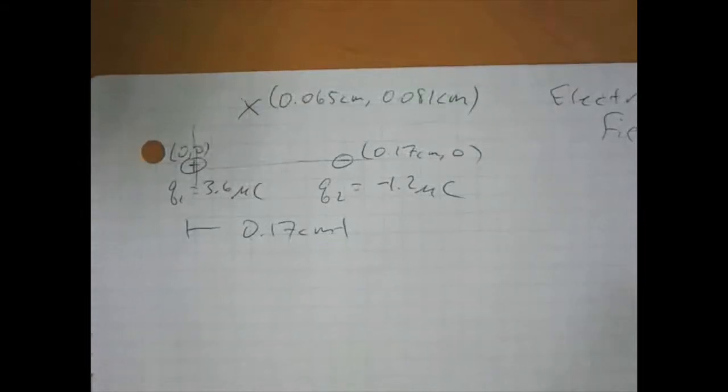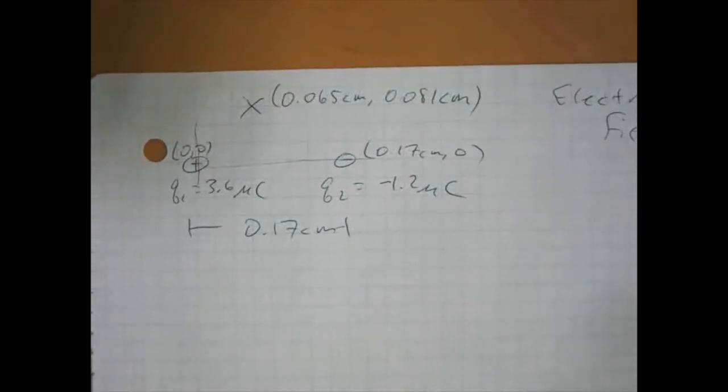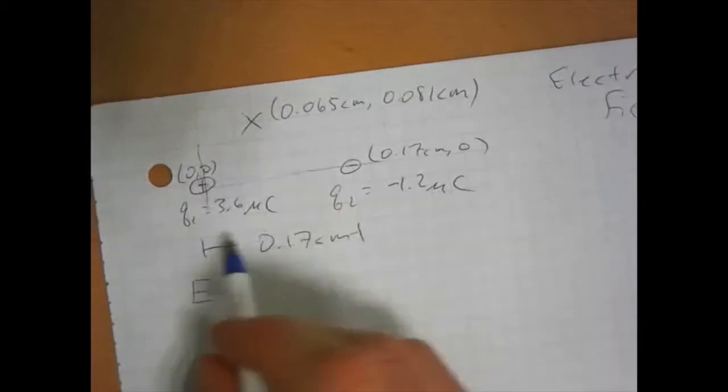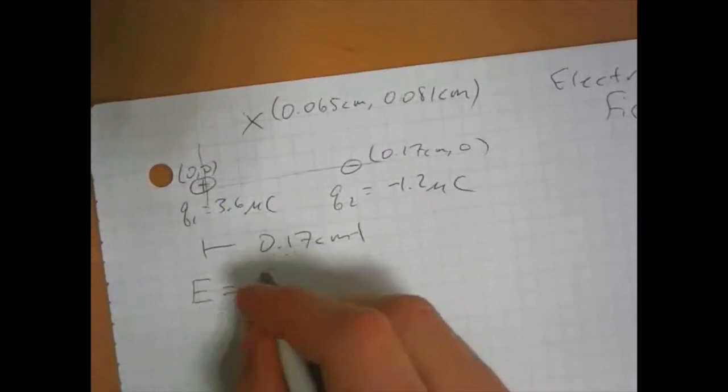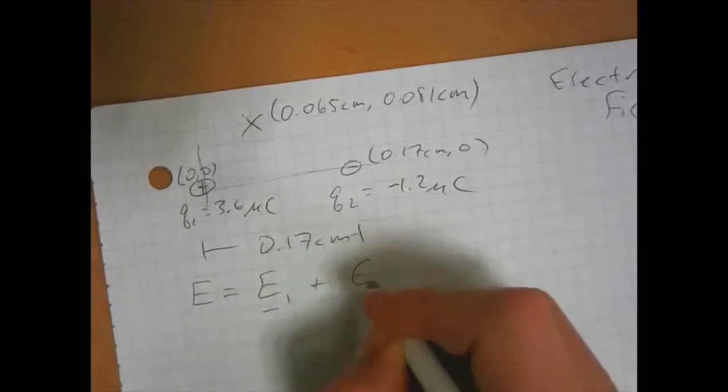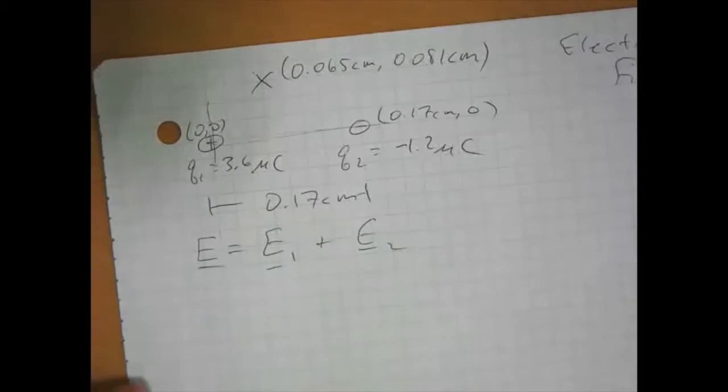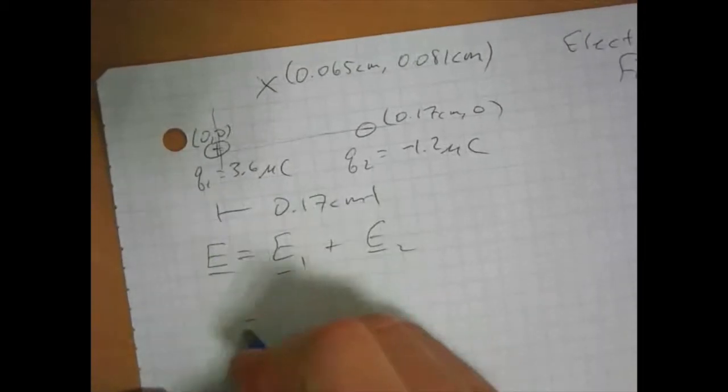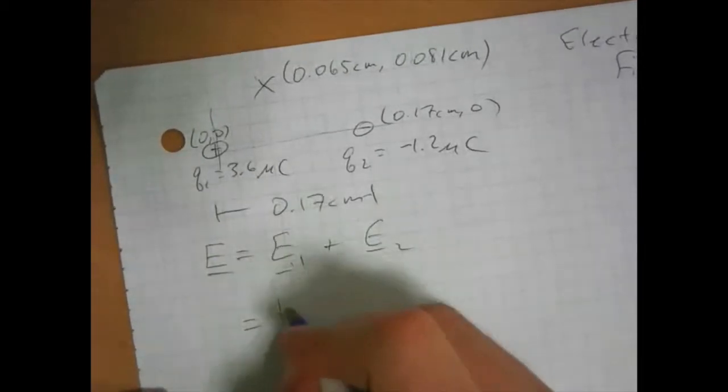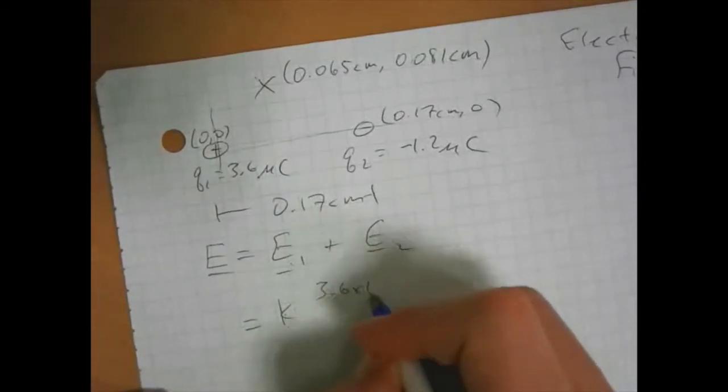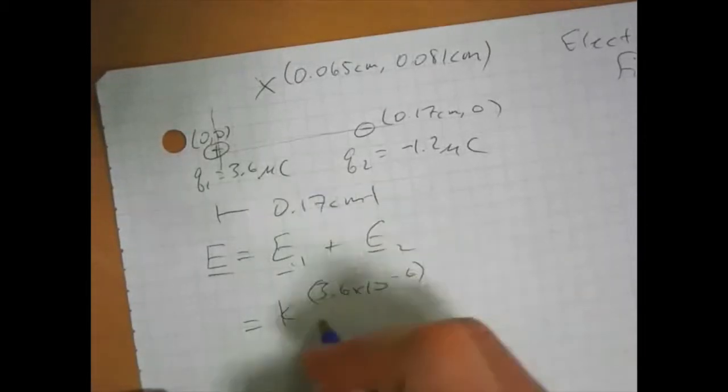We can work that out by making vectors just like we would with our electric force. We want to find the E field there, so the total electric field is going to be equal to the electric field from charge 1 plus the electric field from charge 2, and these are all vectors. From charge 1, it's simpler than charge 2. We've got k, q is 3.6 times 10 to the minus 6 over r squared.